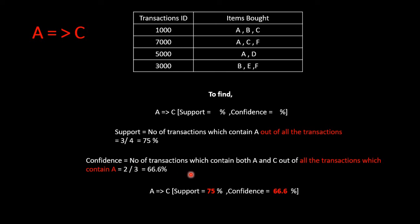Now, what is confidence? Confidence is nothing but the number of transactions which contain both A and C out of all the transactions which contain A. We are going to identify the transactions where we have both A and C. ABC has A and C, ACF has A and C — that gives us 2, while A is found in 3 transactions. So it is 2 by 3, which is 66.6 percent. For A implying C, the support is 75 percent and the confidence is 66.6 percent.